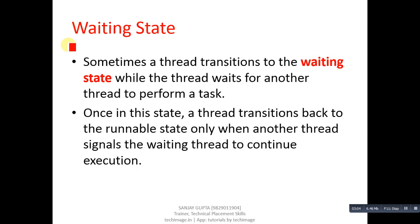The second state is Waiting. Sometimes a thread transitions to the Waiting state while it waits for another thread to perform a task. Once in this state, a thread transitions back to the Runnable state only when another thread signals the waiting thread to continue execution. If any resource is not available, the thread has to wait to acquire that resource.